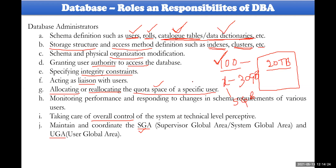To summarize DBA responsibilities: creating users, roles, and catalogs; creating access methods such as indexes and clusters; managing the complete physical schema; granting authority to users; specifying integrity constraints on catalogs and data dictionaries; acting as liaison between users; allocating and reallocating storage space; monitoring organizational performance; and maintaining overall control including SGA and UGA areas.